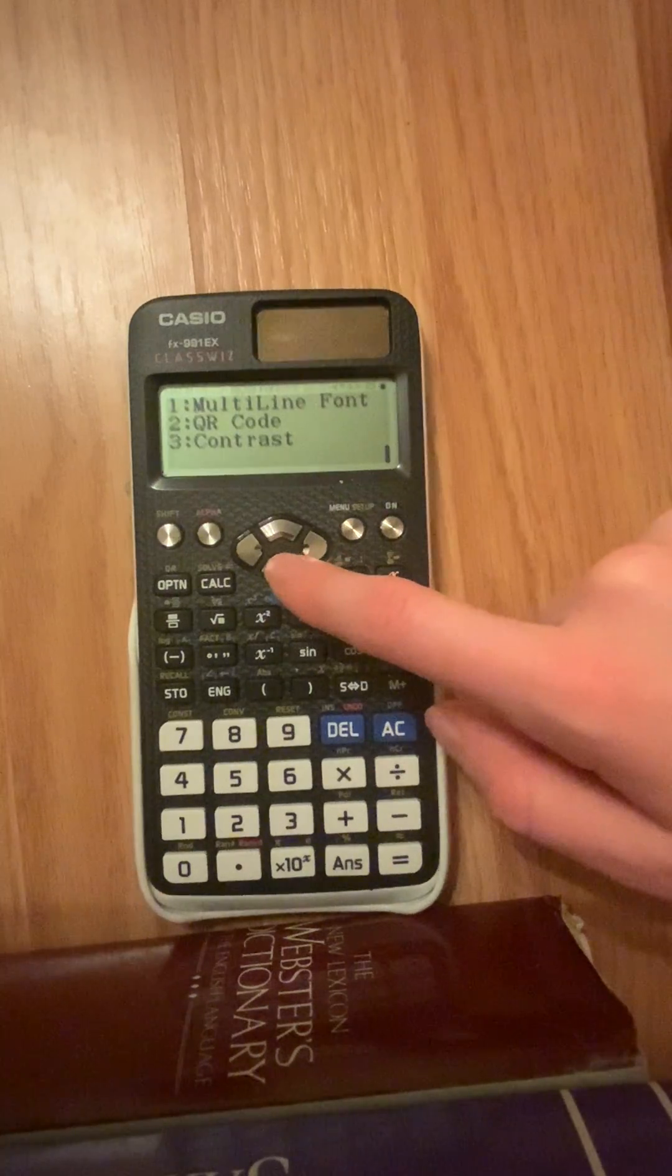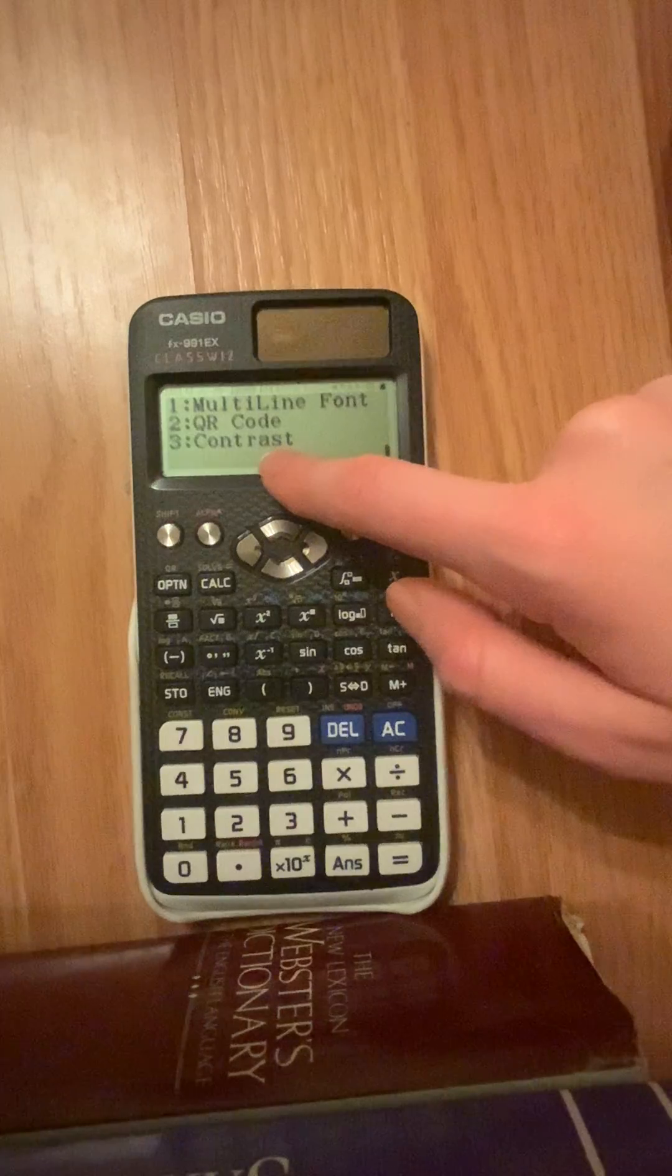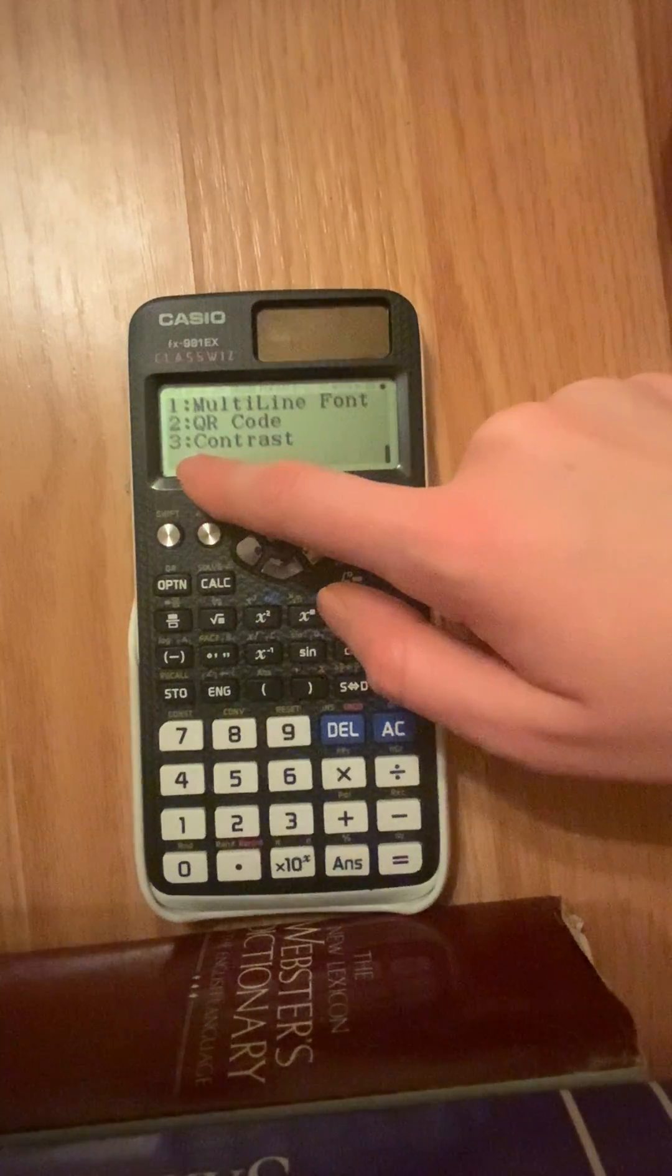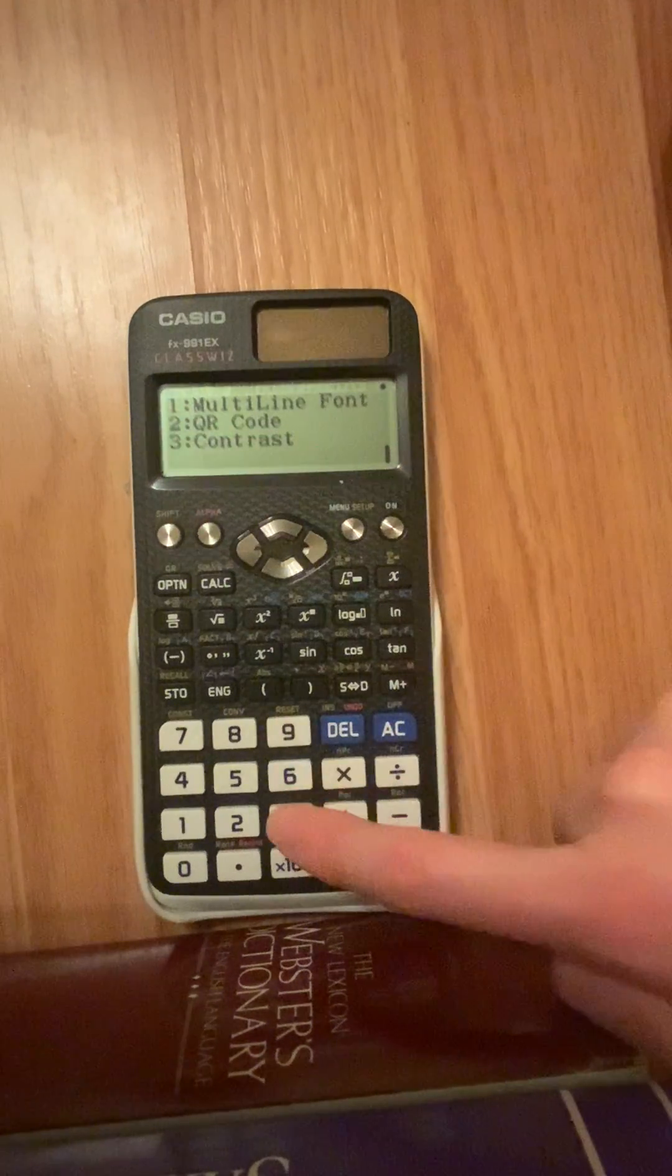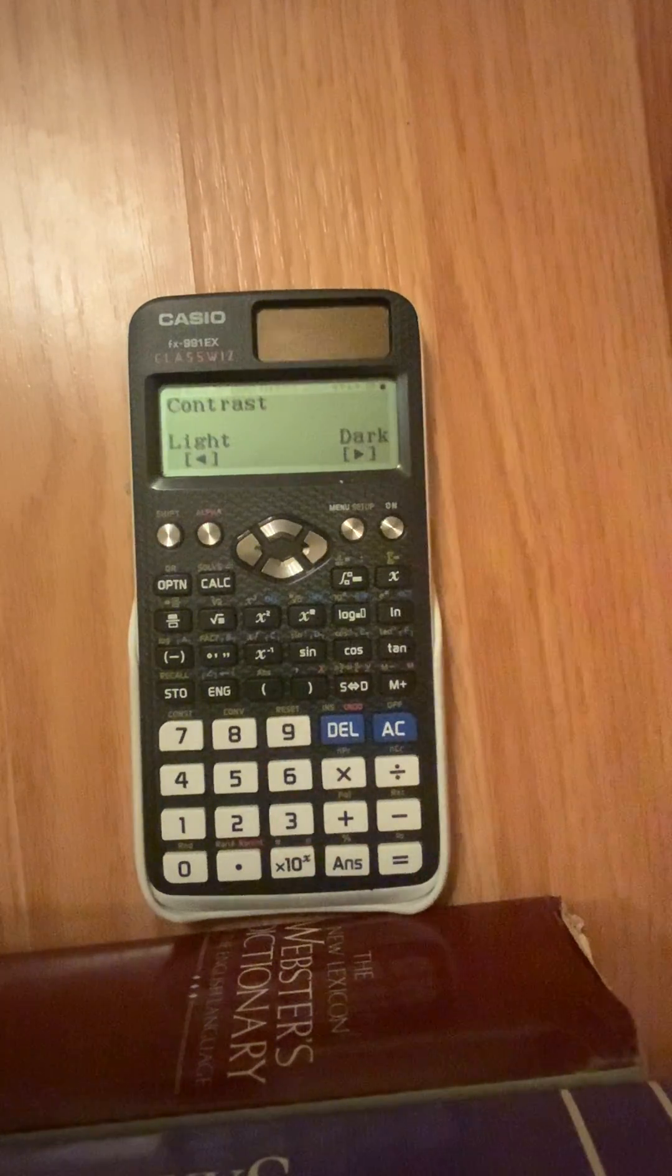You're going to push this arrow three times until you see this word contrast here at the bottom. And see how it's next to a number three? That means you're going to push this number three down here, and it takes you to that.